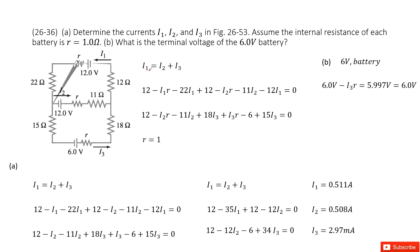We need to determine the current I1, I2, I3 in these circuits. And we know the internal resistance for each battery is 1 ohm. So we look at this circuit, we can see there are three batteries.